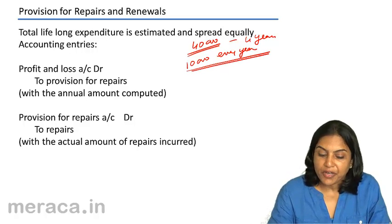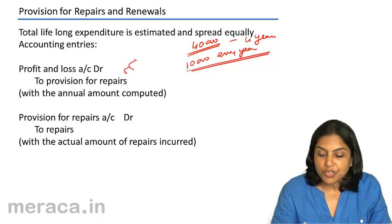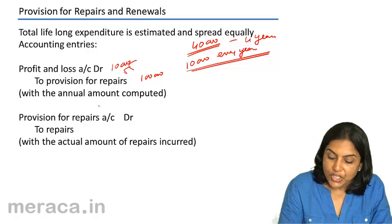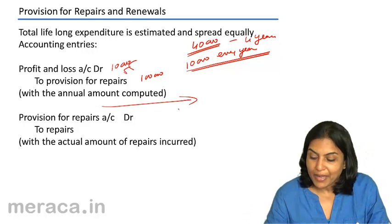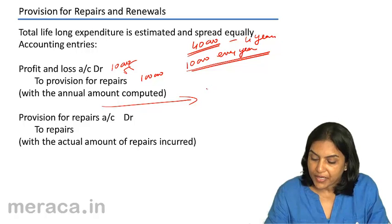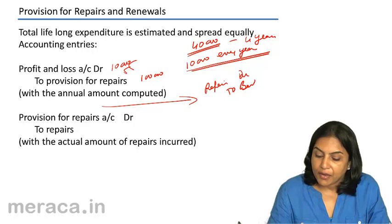The entry for creating a provision is: profit and loss account debit, to provision for repairs, the amount involved being 10,000. When we actually incur expenditure, maybe in year 1, there is hardly any expenditure — maybe we spend only rupees 1,000, with the entry being repairs account debit to bank.